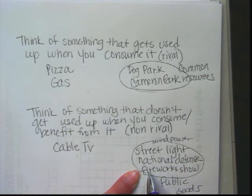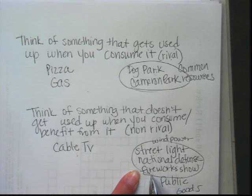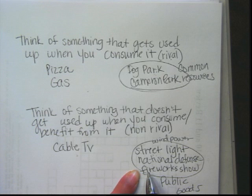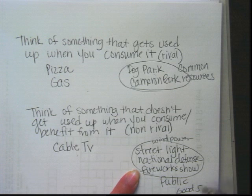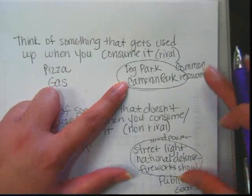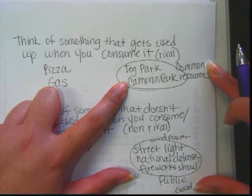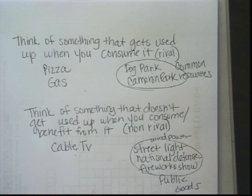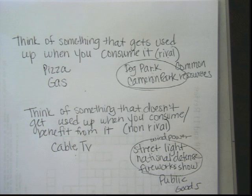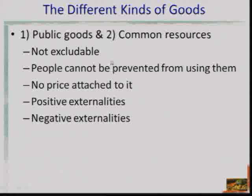For example, on July 4th, HEB always sponsors our fireworks show. Anybody can go watch even though HEB paid for it — you can't exclude people who haven't sponsored the show. All the fireworks are up in the air and anybody can look at them and benefit. Both common resources and public goods are non-excludable, meaning you can't prevent people who haven't paid from benefiting.